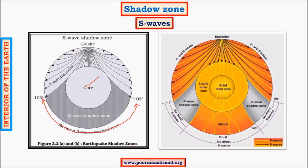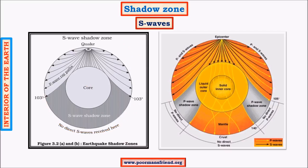The waves do not travel in straight lines, mainly due to reflection and refraction. In reflection, the wave gets reflected. In refraction, the wave bends towards or away from the normal. When a ray moves from a rarer medium to a denser medium, it bends towards the normal, and when it moves from denser to rarer medium, it moves away from the normal. This is the property of waves.